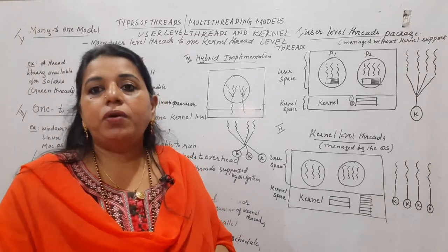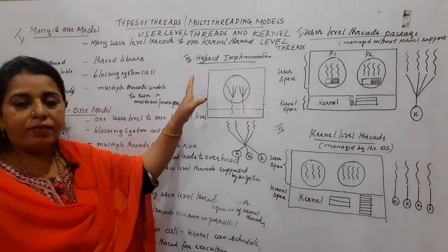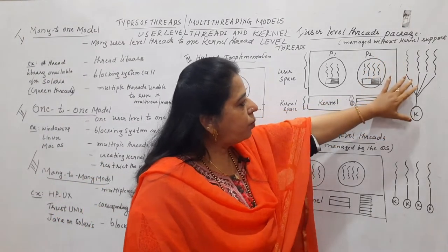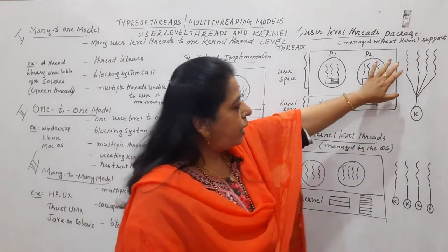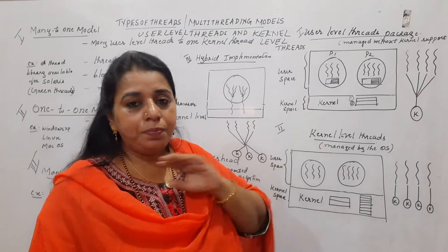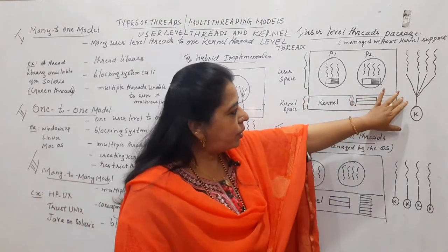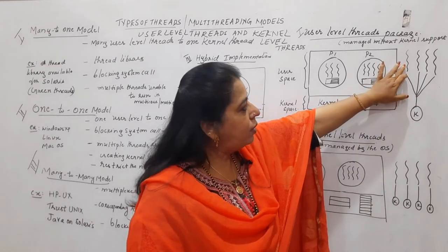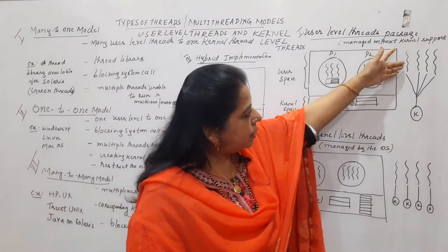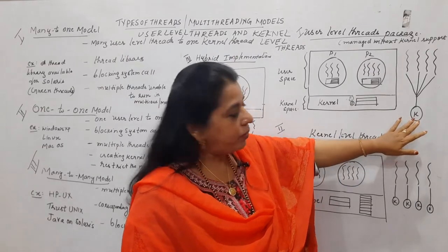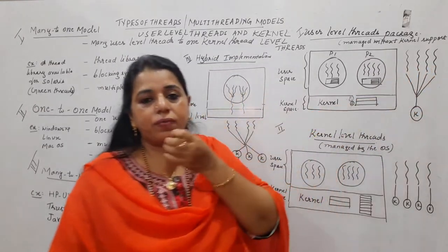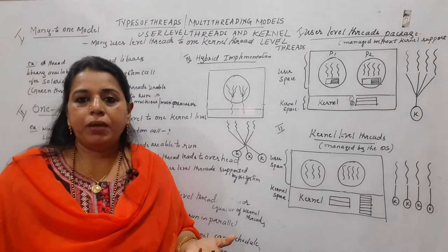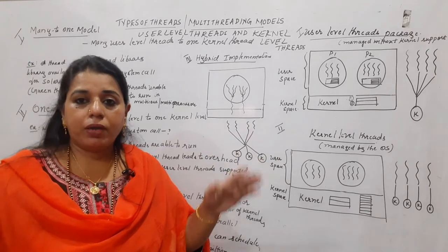The many-to-one model is completely managed with the thread library. Regarding blocking system calls: since all user threads are mapped to one kernel thread, if any thread makes a blocking system call, the kernel thread also gets blocked. As a result, all other threads of that process are unable to access the kernel thread and they also get blocked. This is a clear disadvantage — it blocks the remaining threads of that process.